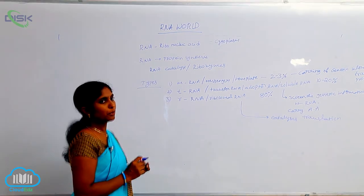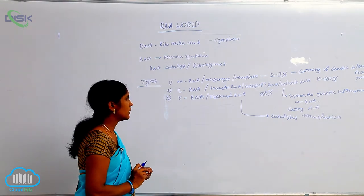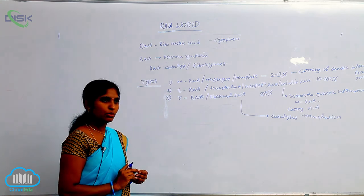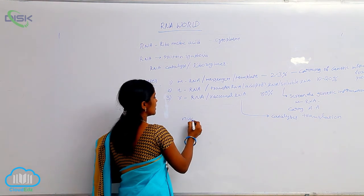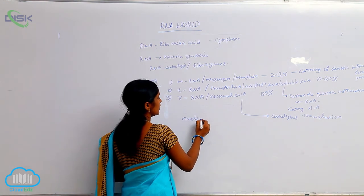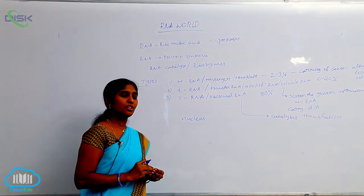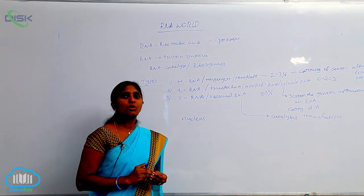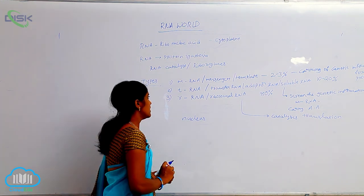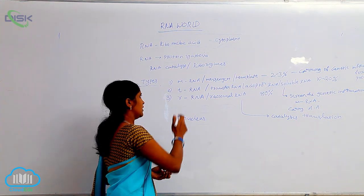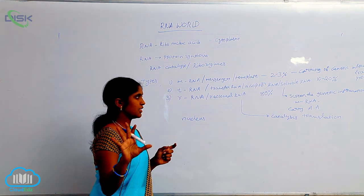Where are they produced? mRNA and tRNA are both produced in the nucleus, whereas rRNA is produced in the nucleolar organizer. So these are the three types of RNAs.